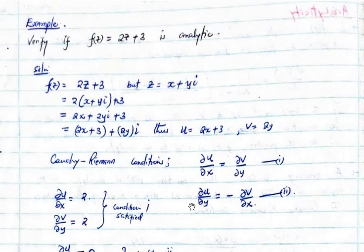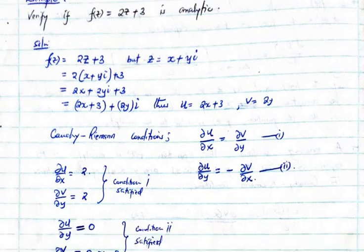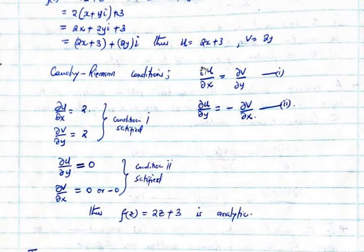What about condition 2 which is having this negative here? Now let's subject partial u, partial y. We don't have any variable y here. So what we get is a 0. Then what about partial v, partial x? No x here. So what you expect is a 0 or negative 0. There's no harm here. If I get 0 and negative 0, then condition 2 is satisfied.